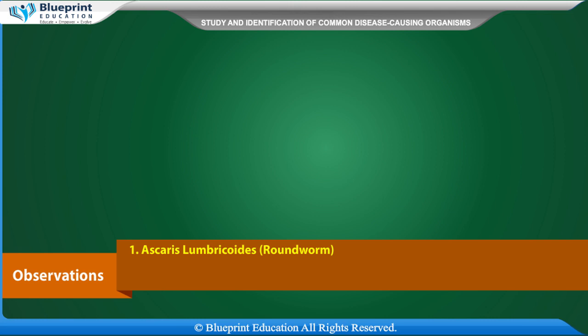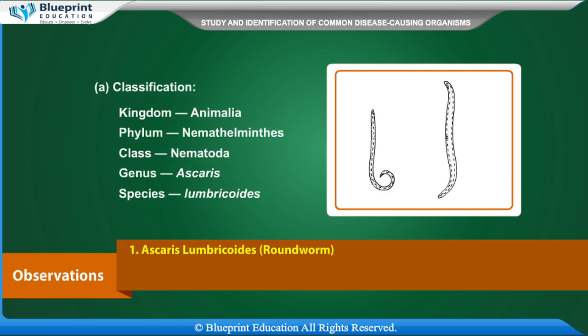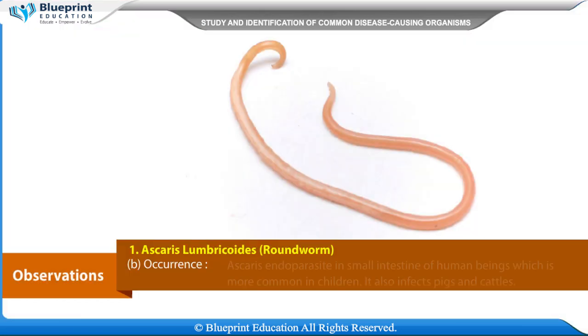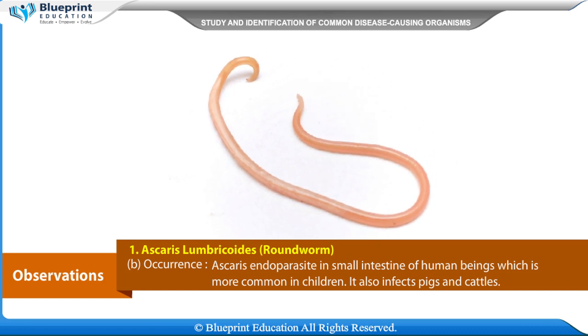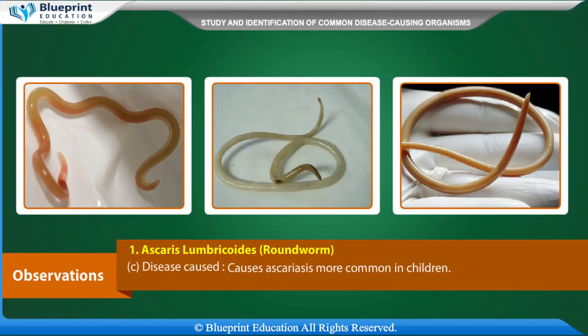Observations: Ascaris lumbricoides, commonly known as Roundworm. It lives in the small intestine of human beings and is more common in children. It also infects pigs and cattle.